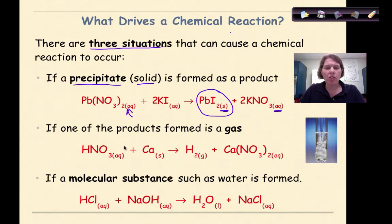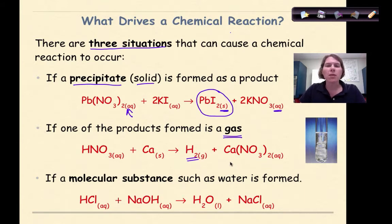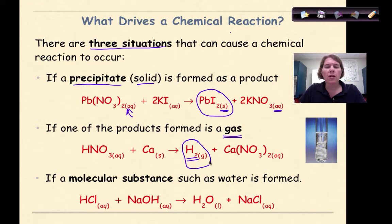Another way that a reaction can occur is if one of the products formed is a gas. Here I have nitric acid as my solution, I'm adding calcium metal to it, and as a result of this exothermic reaction, you're going to produce hydrogen gas and then calcium nitrate. The hydrogen gas is what's driving this reaction forward — especially in an open system where the gas can be released into the environment, that pushes the reaction forward.